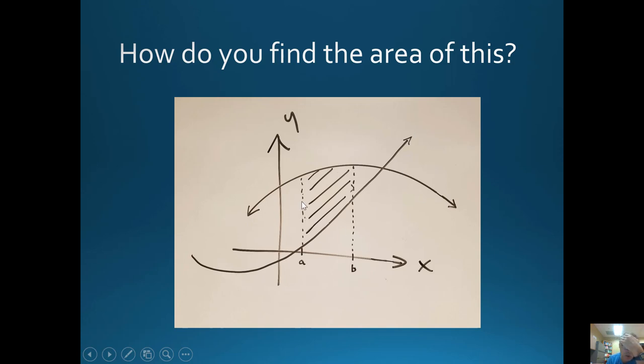We don't want to find the area between them for all infinity. Let's say we want to find the area from point A to point B on the x-axis. A and B are points on the x-axis, and we've drawn dotted lines up from both of them. We want to know what this area is between the curve f of x and the curve g of x. How do you do that?